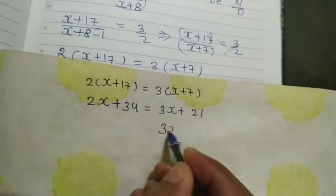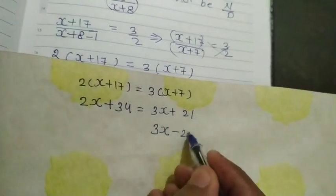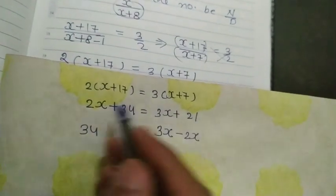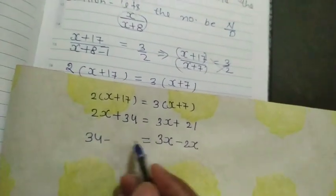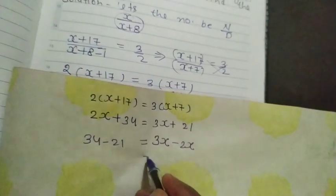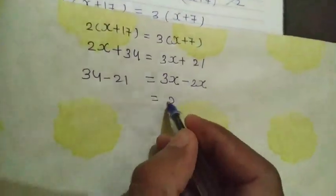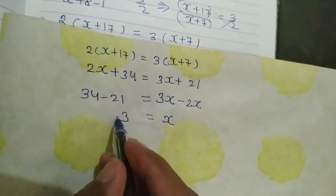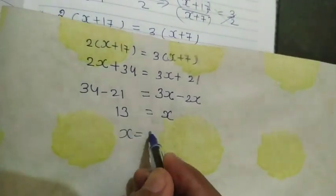So 3X and this 2X comes to this side, the sign will change from plus to minus. 34, and here 21 will change to this side with the sign changing to minus. 3X minus 2X equals X, 34 minus 21 equals 13. So here X equals 13.